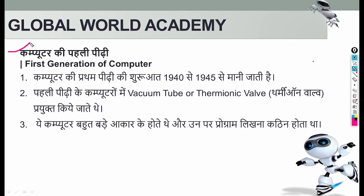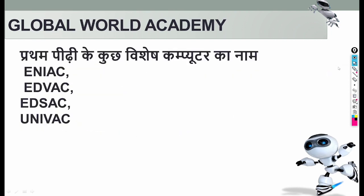The first generation started from 1940 and went until 1956. In the first generation, vacuum tubes — also called thermionic valves — were used. These computers were very large in size. Examples from this generation include ENIAC, EDSAC, EDVAC, and UNIVAC.